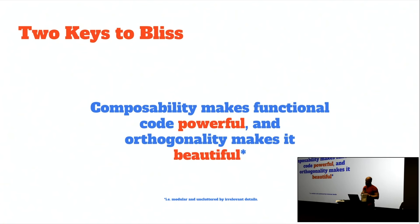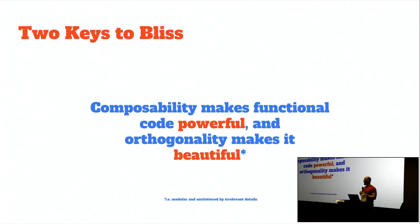Composability makes our functional code powerful — able to solve big problems out of a small number of pieces. And orthogonality is what makes it beautiful. These two things combine together to make our functional code both powerful and beautiful.